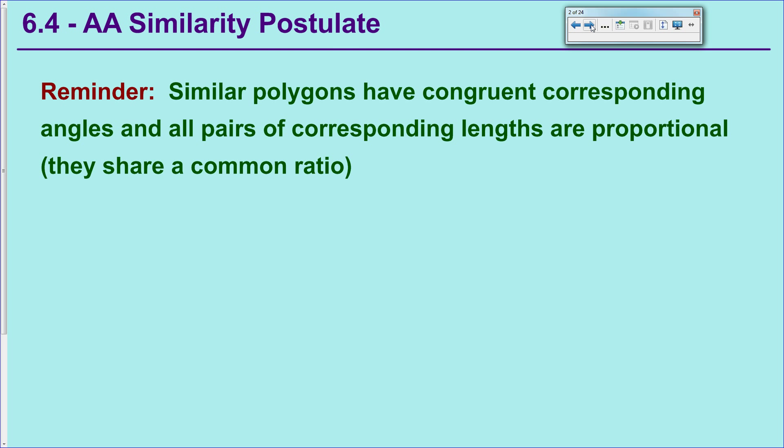To get started I want to do a little bit of review. Just remind yourself what are similar polygons. We're going to talk about triangles today but it's helpful to know everything about similar polygons. Two big things: they have congruent corresponding angles and all pairs of corresponding lengths are proportional, meaning that they share a common ratio. Also meaning that you can find that ratio and write a giant proportion equation relating all lengths of corresponding parts together.